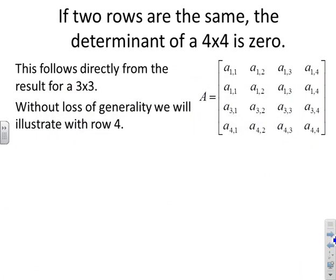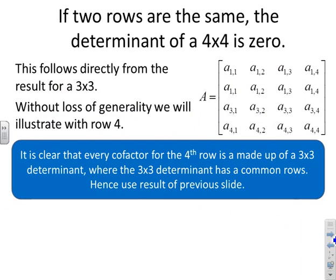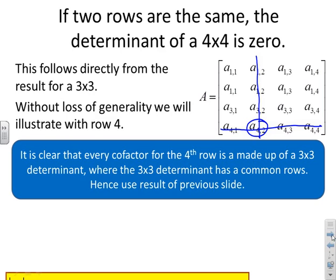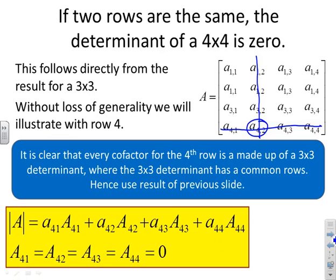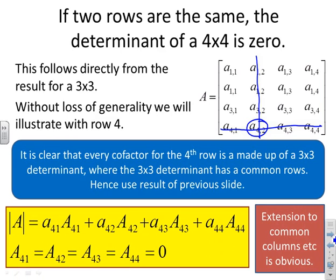For a four-by-four with two identical rows, every cofactor for the fourth row is a three-by-three determinant that itself has common rows — for example, the cofactor for position (4,2) produces a minor with two identical rows — and we've already shown those are zero. Extension to common columns is equally straightforward.